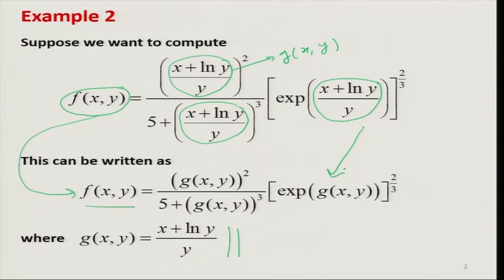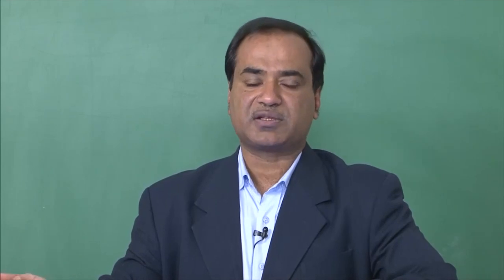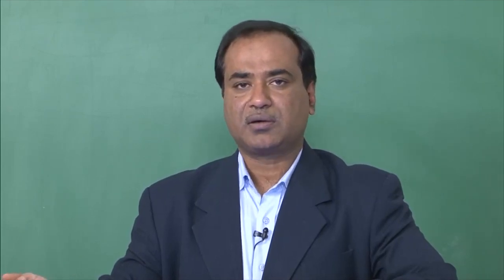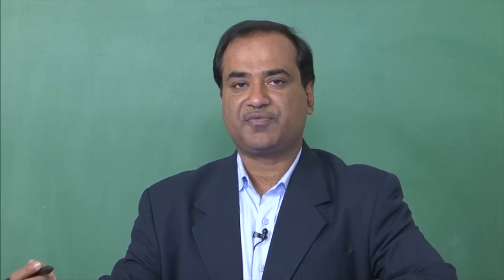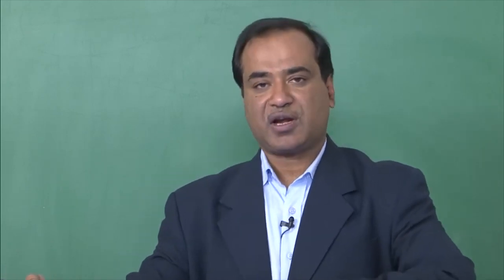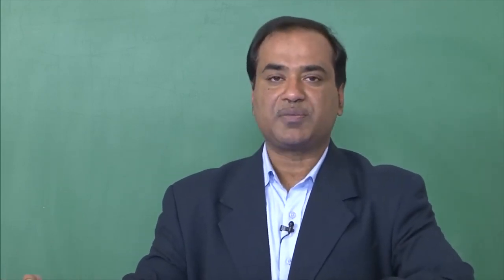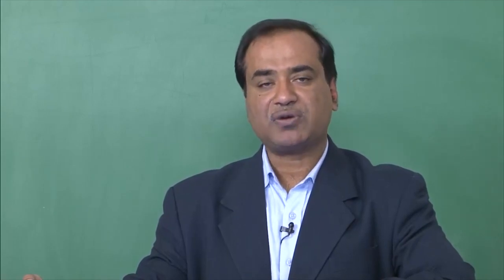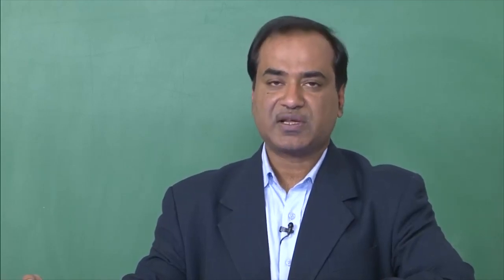My objective in this example is to show you that we discussed earlier that when defining input and output variables, the input variable can be a scalar, a vector, a matrix, or even a function itself. Through this example, I would try to show you that the input variable can be a function. Also, a complicated program can be divided into several smaller programs and then joined together or called inside a function.